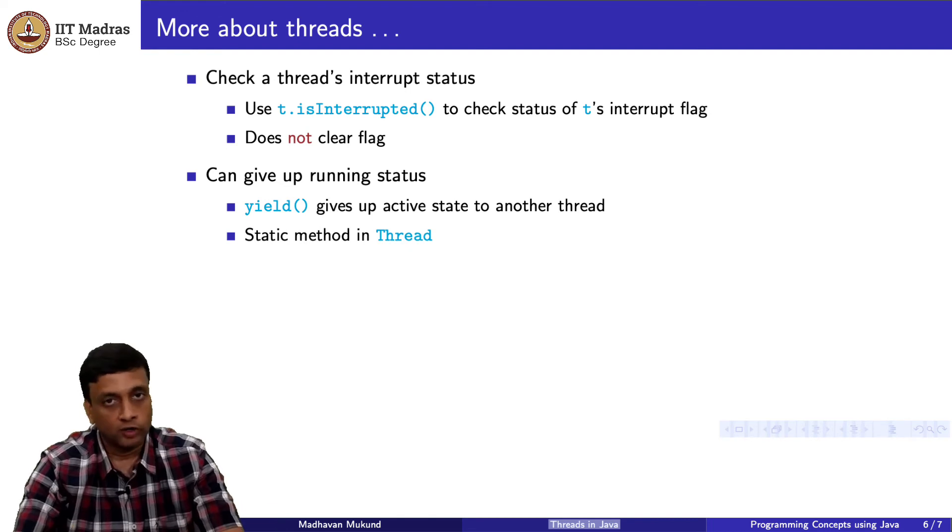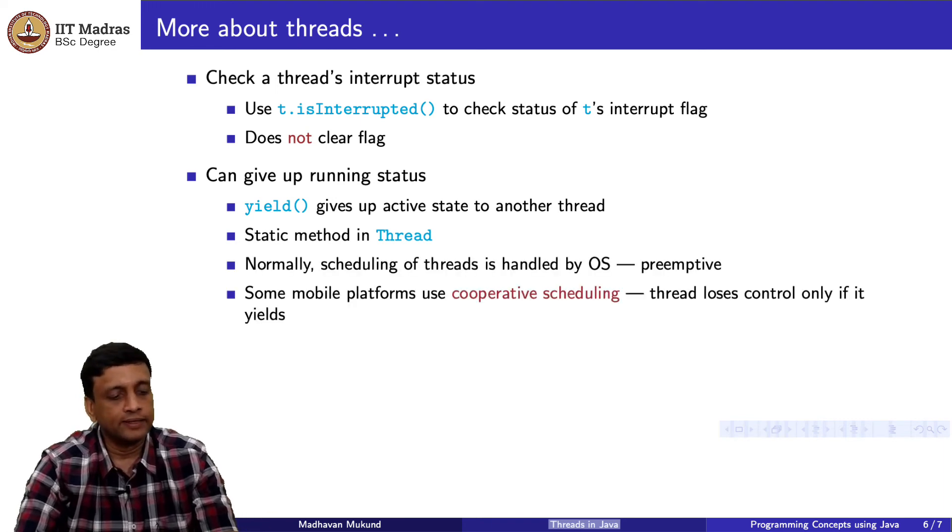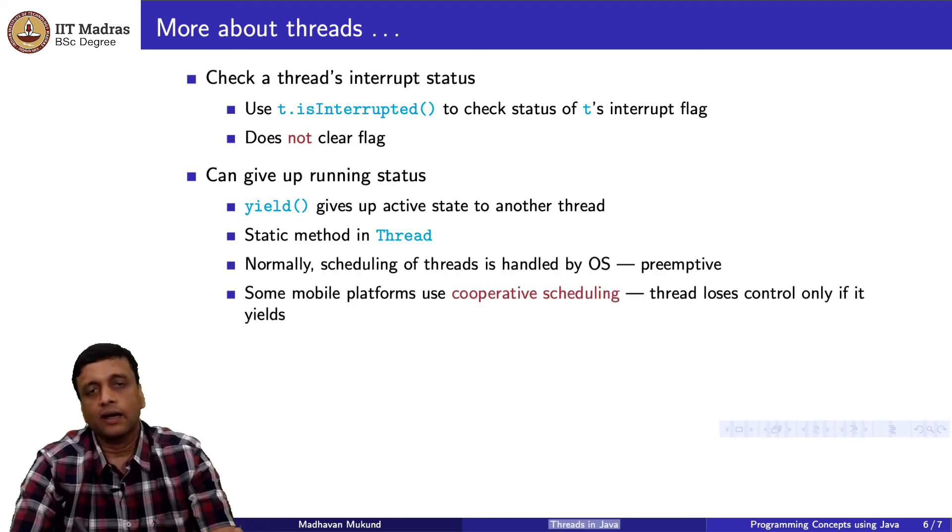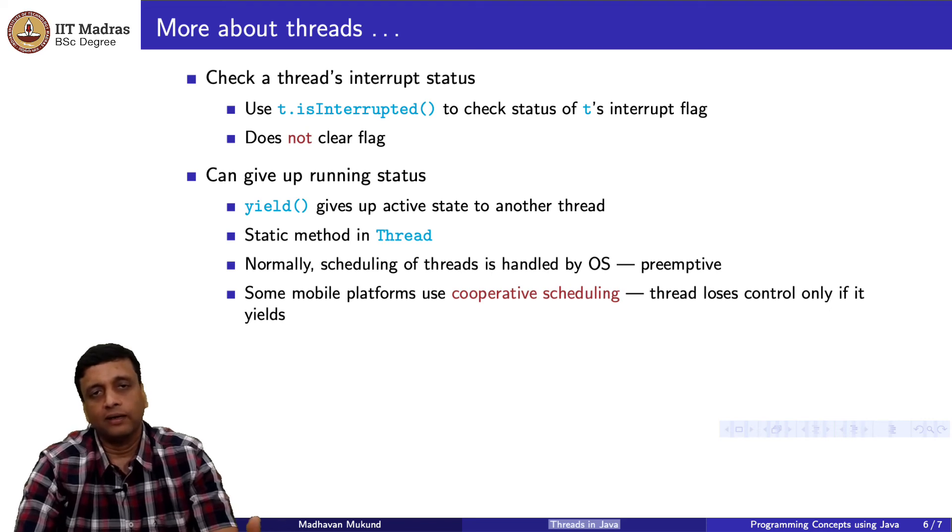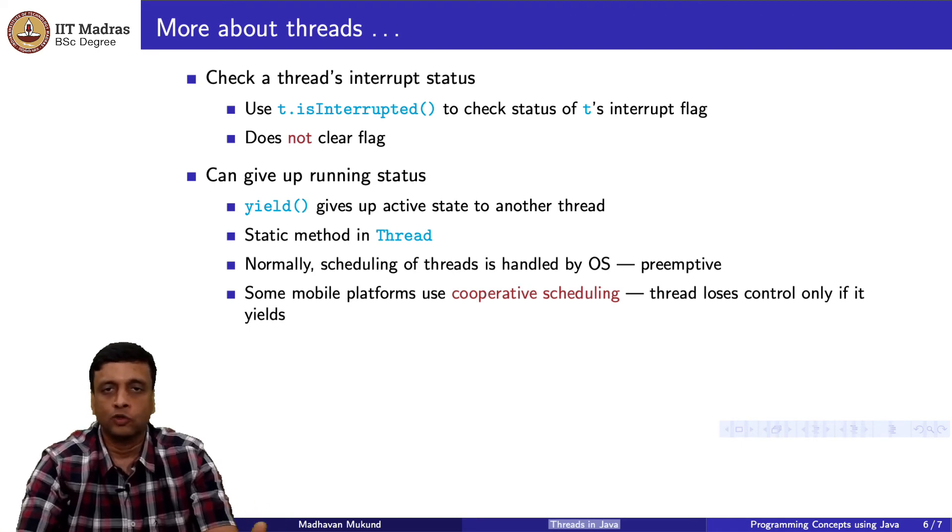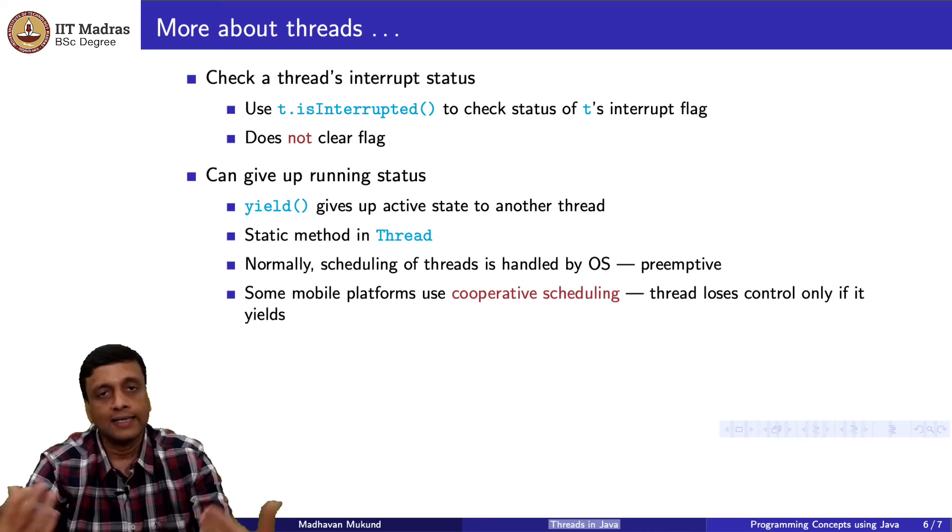There is something called yield which gives up the active status to another thread. Basically it's still runnable. It's not blocked. It's just saying give some time to somebody else to run. I will come back and run later. This is a static method in thread and this is used typically you don't use it very often in normal java programming because the OS will actually guarantee that every thread yields periodically. No thread hogs the entire resources. But when you are doing things on a mobile environment, it may be that the OS does not do it. It allows a thread to run unless it yields.